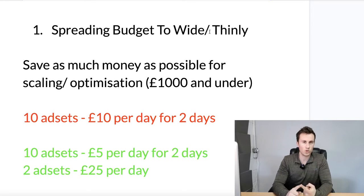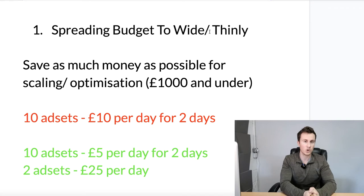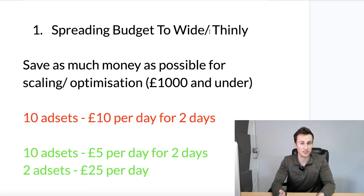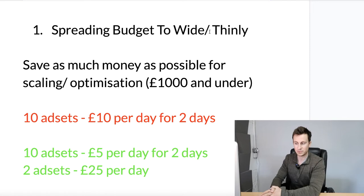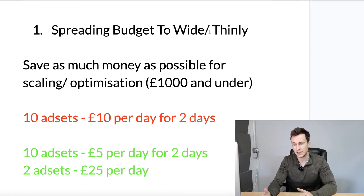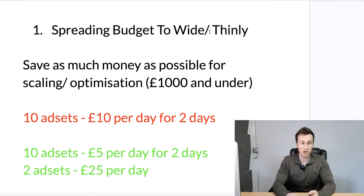That doesn't give you the chance to recoup those testing costs in the scaling and optimization phase. Consider that it only takes one really good performing ad set to potentially make tens of thousands, even hundreds of thousands of pounds. To find that one golden ad set, it might take 20, 30, or 40 other ad sets to test first. So following the green example on screen, devote say 20–40% of your overall budget to the testing phase — 10 ad sets at £5 per day for two days — then take the remainder into the scaling phase on the best one or two ad sets.